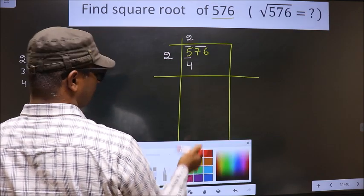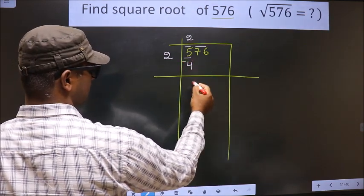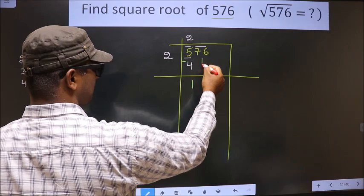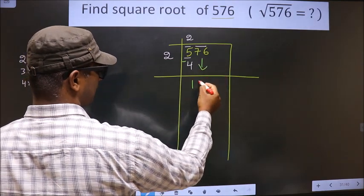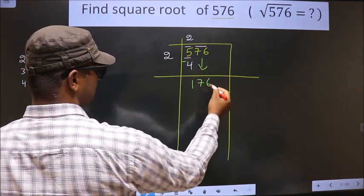Now you subtract: 5 minus 4 is 1. Now take this pair down — it will become 176.